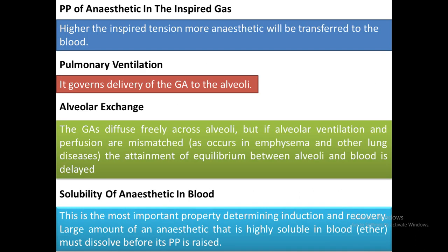Factors affecting pharmacokinetics: first, partial pressure of anesthetic in inspired gas — higher inspired tension means more anesthetic transferred to blood. Second, pulmonary ventilation is responsible for delivery of the anesthetic to the alveoli. Third, alveolar exchange — if alveolar ventilation and perfusion are mismatched, as in emphysema and other lung diseases, attainment of equilibrium between alveoli and blood is delayed.